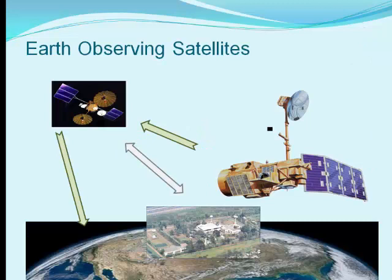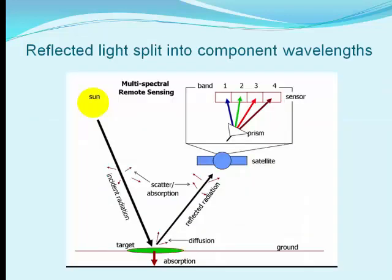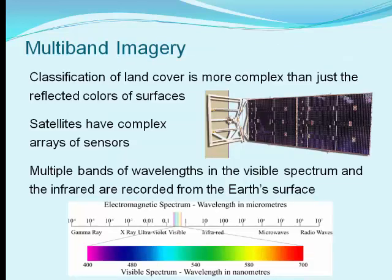The characteristics of Earth's surface can be studied efficiently with the assistance of satellites such as Landsat. The pixels in satellite images are classified based on spectral signatures of reflected light. The Sun is the source of the energy that provides a signal for remote sensing. Radiation from the Sun is reflected from the Earth's surface and when it reaches the satellite it's split into component bands. Complex arrays of sensors aboard the Landsat satellites record multiple spectral bands from the visible light as well as the infrared.